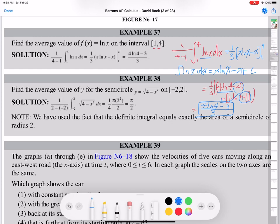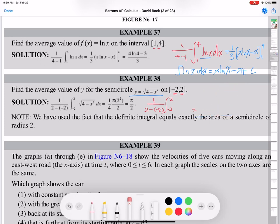Let me solve example 38 now. Find the average value of y for the semicircle y equals square root of 4 minus x squared on [-2, 2]. So by that formula, 1 over b minus a, b is 2, a is negative 2. So 2 minus negative 2. Integral negative 2 to 2. What is the function? f(x), square root of 4 minus x squared dx.